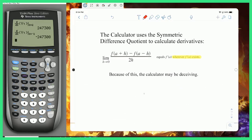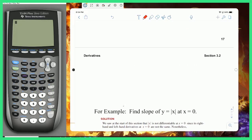Awesome. So the calculator uses something called the symmetric difference quotient to calculate derivatives. And specifically, the symmetric difference quotient is the limit as h goes to 0 of f(a + h) minus f(a - h), all divided by 2h. Now, it turns out that this actually equals f prime of a, wherever f prime of a exists. However, if it doesn't exist, your calculator may give you a deceiving answer. So you have to be very careful when you're asking your calculator to compute derivatives. Here's an example.